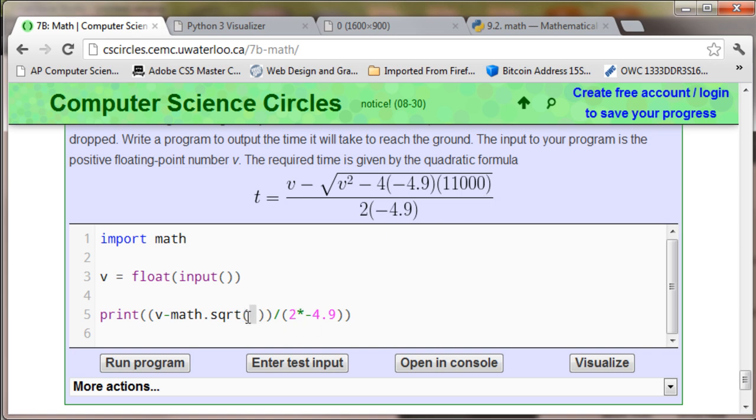Anyways, so the item is going to be V times times, which means raised to 2. So V to the second power, remember this is all being square rooted, minus.